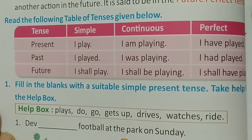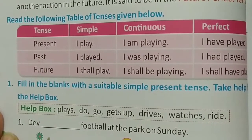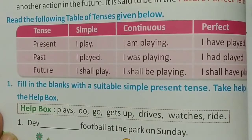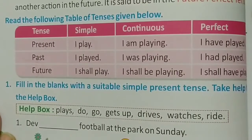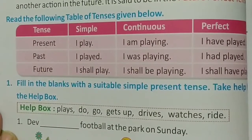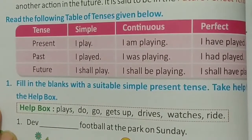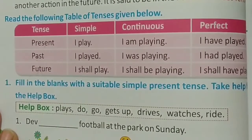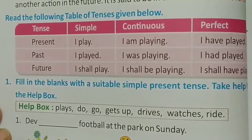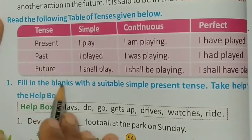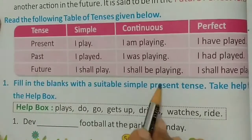Hello students. In previous videos we have completed tenses — present, past, and future — and we learned about all the types of tenses: simple present, simple past, simple future, present continuous, past continuous, future continuous, present perfect, past perfect, and future perfect tense. Now we go to the exercise. Question number one is: fill in the blanks with a suitable simple present tense.